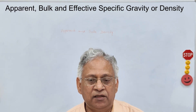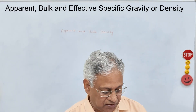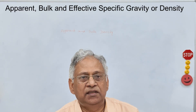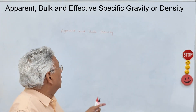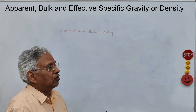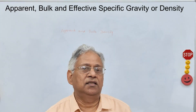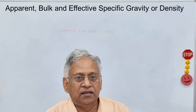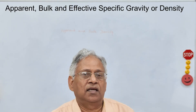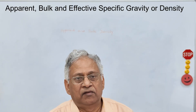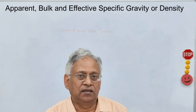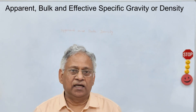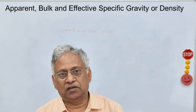Hello friends. Today I shall tell you the difference between apparent specific gravity and bulk specific gravity, or apparent density and bulk density of aggregate. These densities are required in the design of hot mix asphalt. Whenever you do the Marshall method of mix design, you need to know the density of the aggregate and the bituminous mixture.